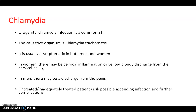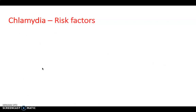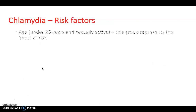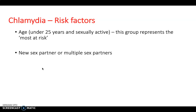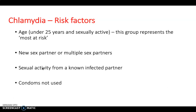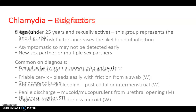If untreated or inadequately treated, chlamydia risks ascending infection and further complications, and patients may risk spreading the infection to their sexual partners. Risk factors include being under 25 and sexually active — this group represents the most at risk — as well as new or multiple sexual partners, sexual activity with a known infected partner, not using condoms, and a history of a prior STI.